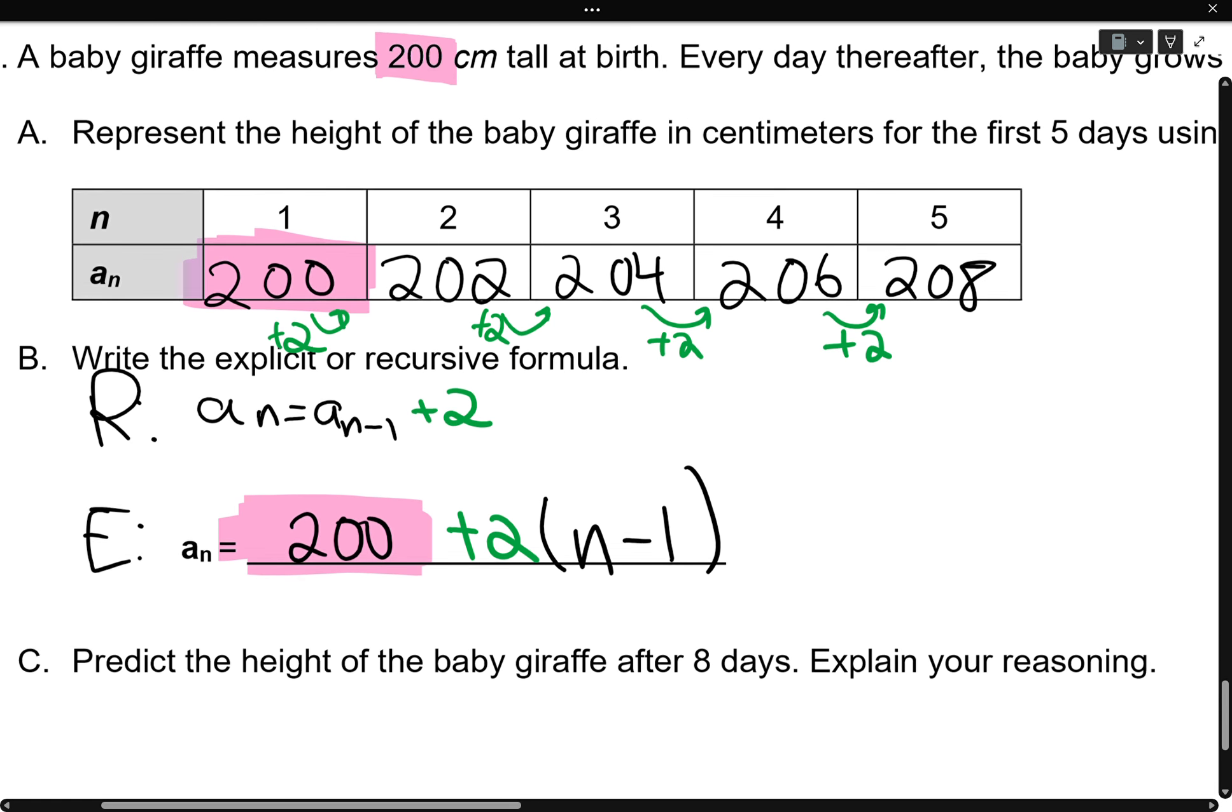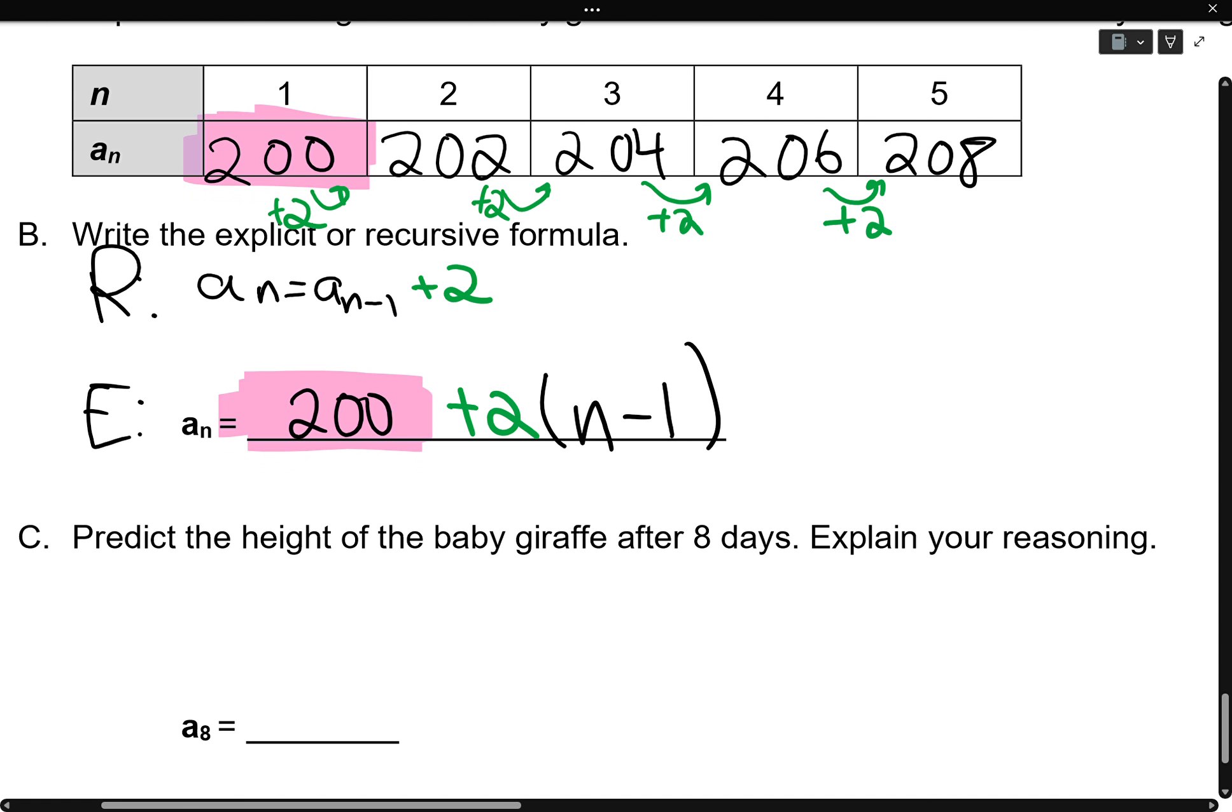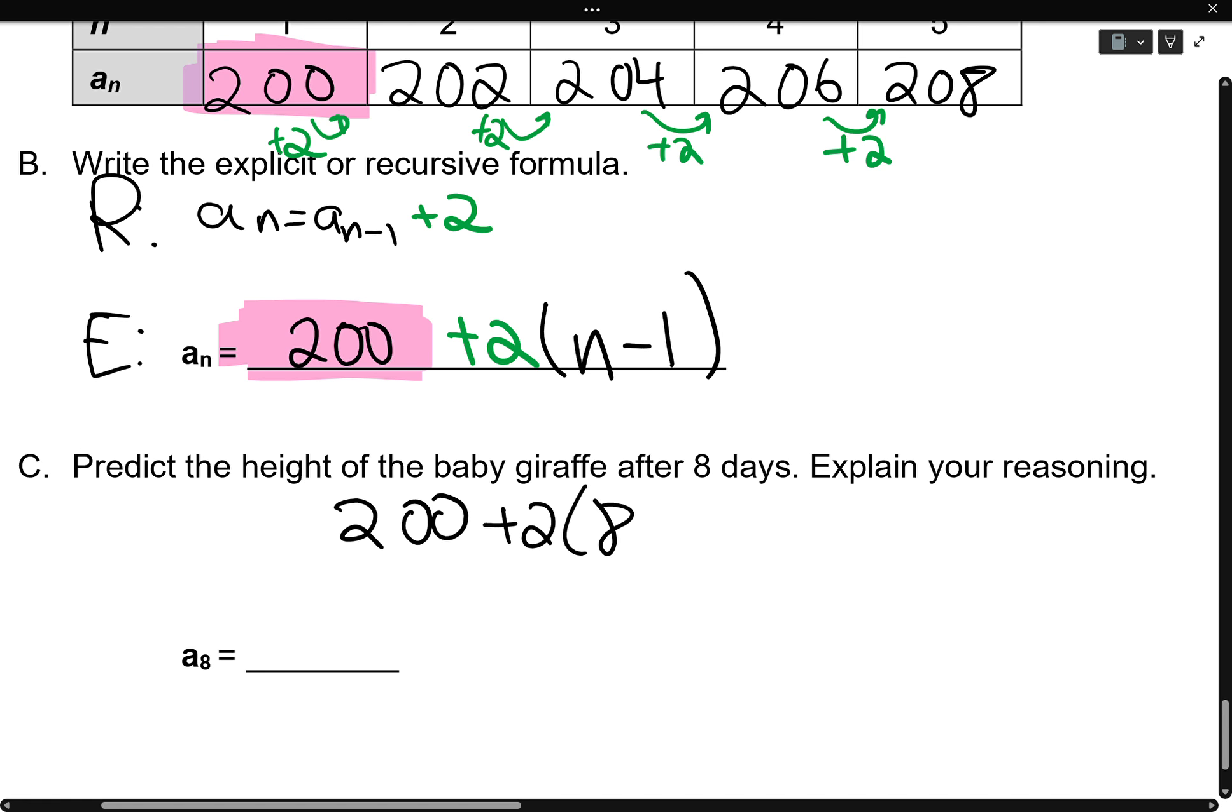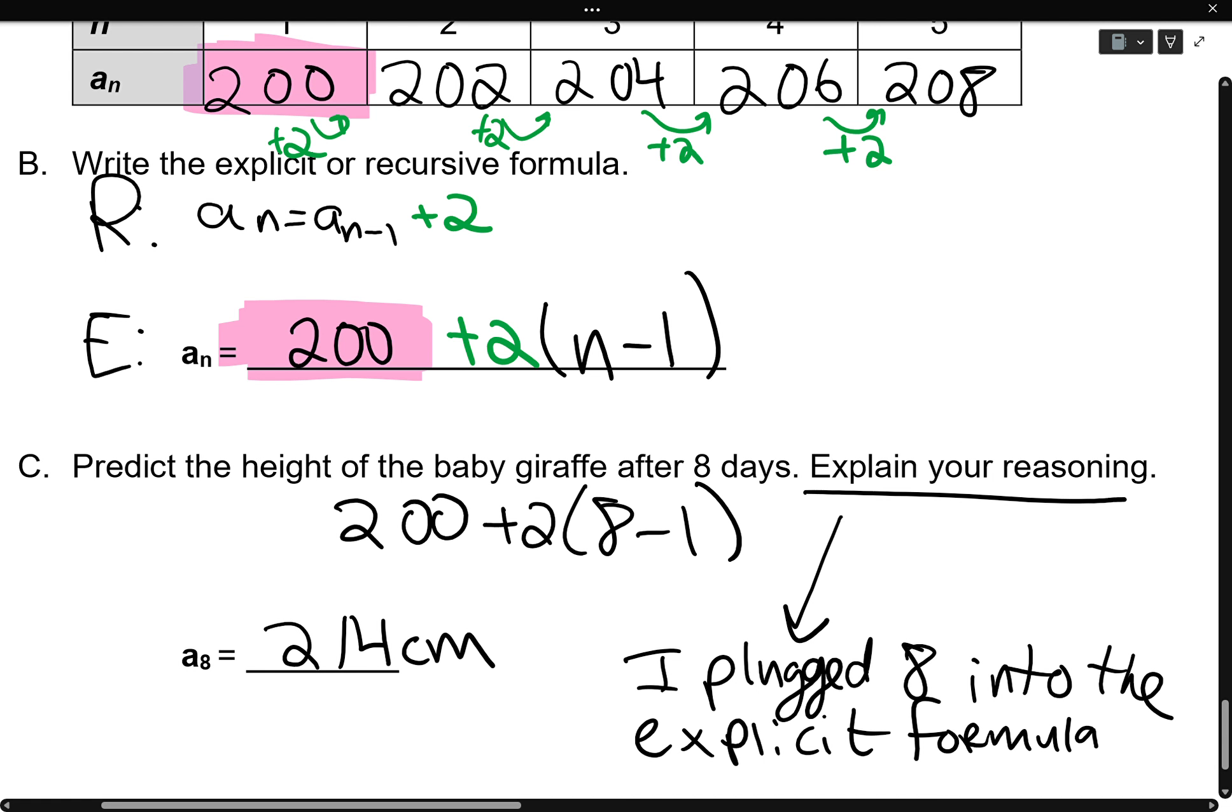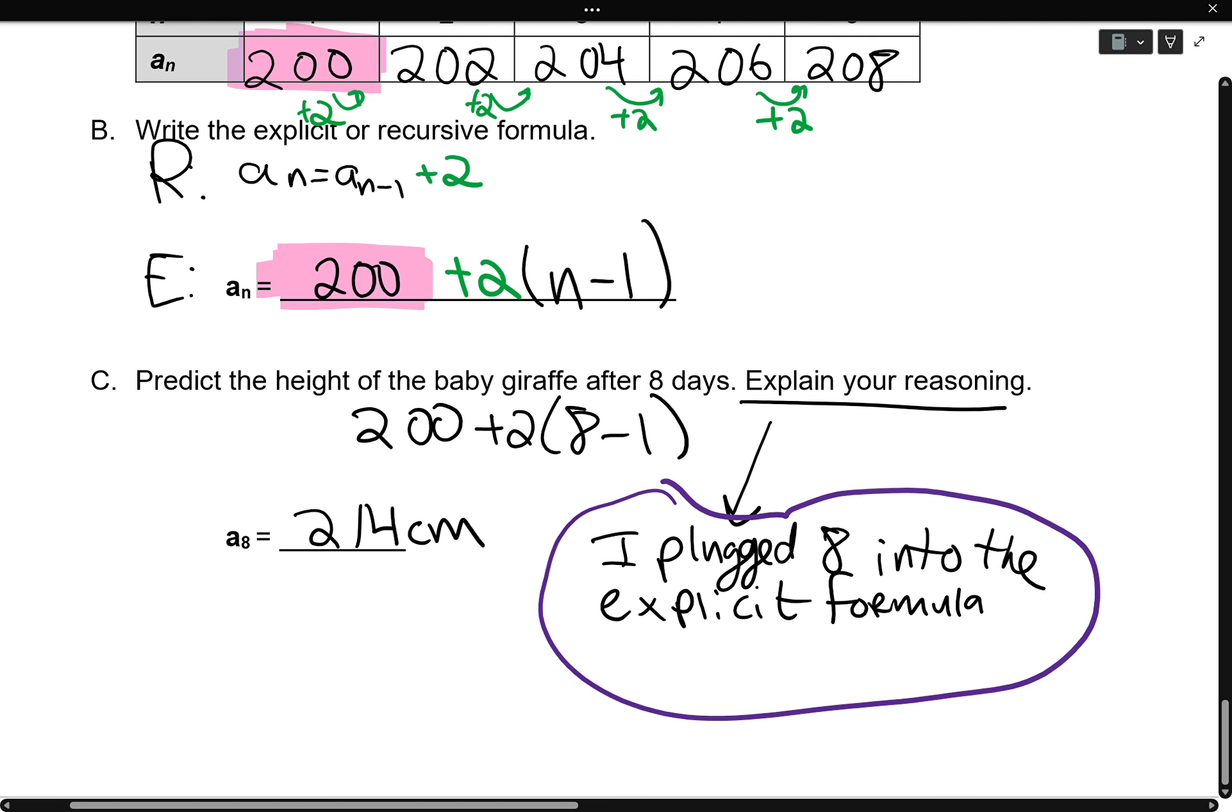Now, the reason I prefer the explicit is for letter C. Predict the height of the baby giraffe after eight days. Now, if you were doing the recursive, you would have to keep adding until you got to day eight. Otherwise, we could just plug this into our calculator with 200 plus two and then eight minus one, which gives us 214 centimeters. Now, explain my reasoning. I plugged eight into the explicit formula. Now, let's say you didn't use the explicit formula. Let's say you continued the table. That's what you would write. I continued the table. I followed the pattern. So I want you to use your language, your English language, to tell us what you did.